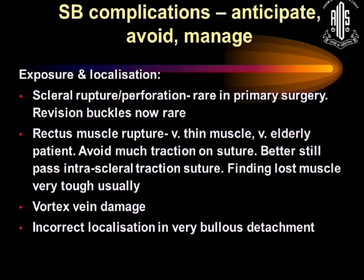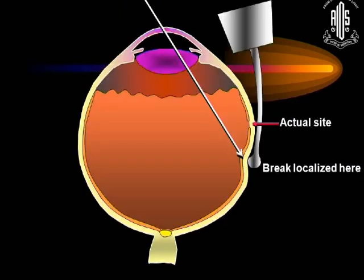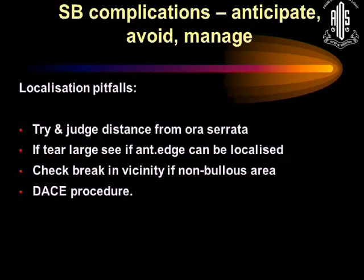Vortex vein damage is something you have to guard against when passing your muscle hooks. Incorrect localization in very bullous detachments is also a concern. In a bullous detachment you actually tend to localize much more posteriorly than the actual break. To avoid that, try and judge the distance of the break from the ora serrata. If the tear is large, localize the anterior edge and then determine where the posterior edge would be.